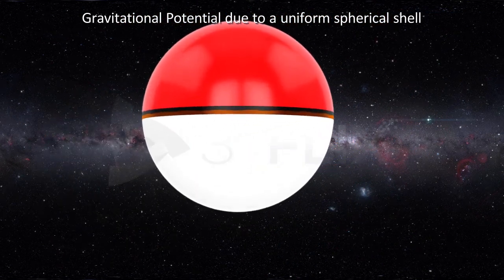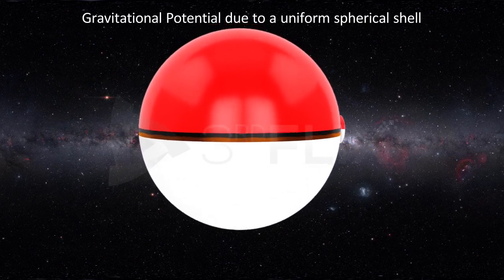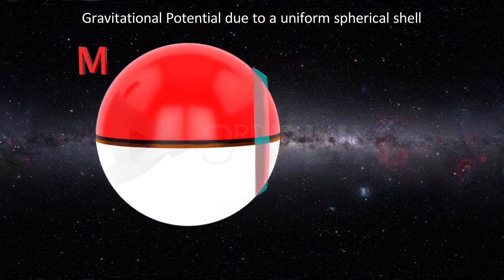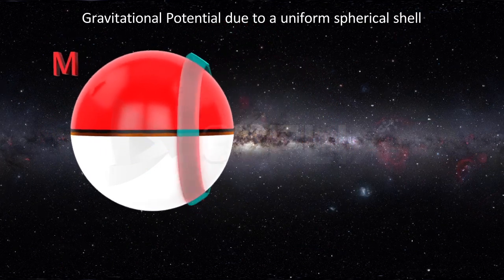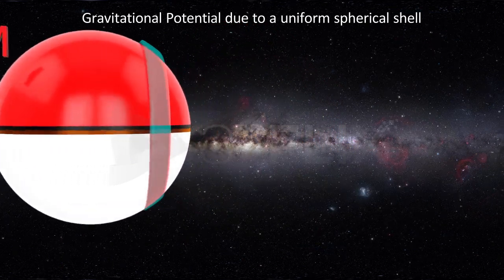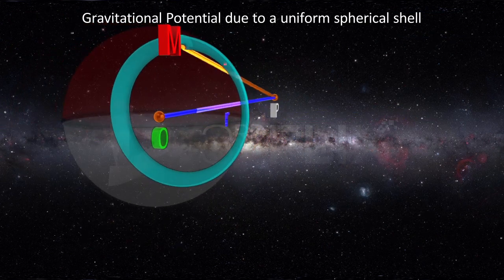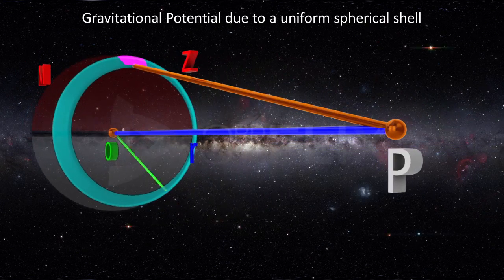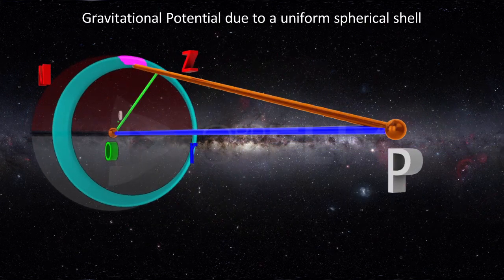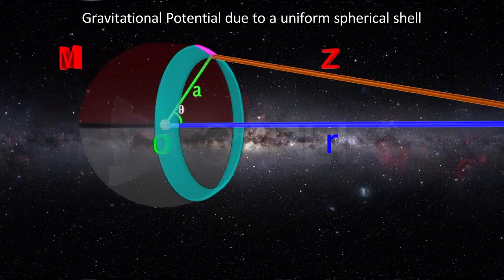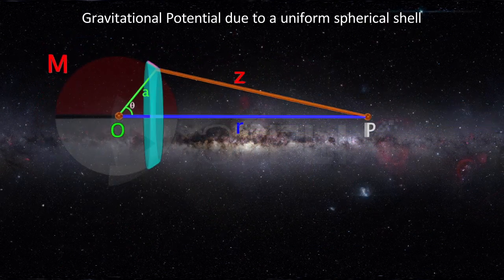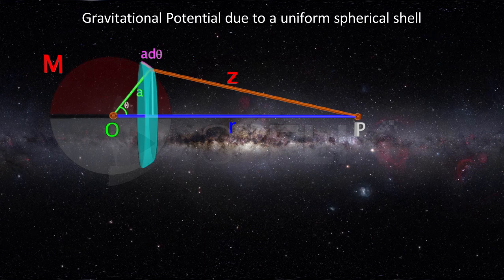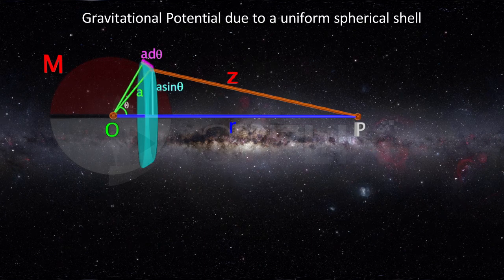A spherical shell can be considered as a collection of an infinite number of rings. Consider one such infinitely thin ring element of the shell such that any point on the ring is at a distance z from P, and it subtends an angle theta at O with the line OP. The radius of this ring is a sin theta and its thickness is a d theta.